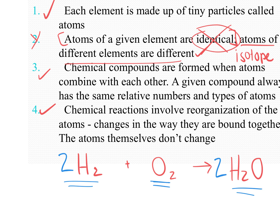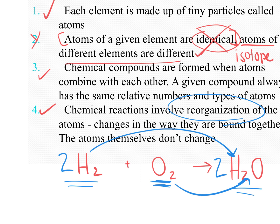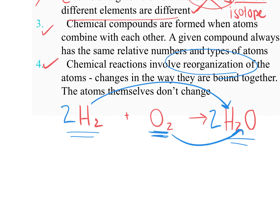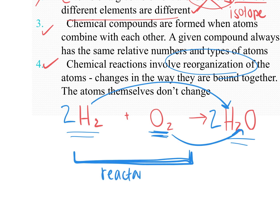This reaction satisfies the law of conservation of mass — the atoms rearrange themselves from reactant to product. The hydrogen started out bonded to each other and now they're bonded to oxygen; the oxygen started bonded to each other and now they're bonded to hydrogen. They reorganized within the chemical reaction. The left side is called the reactants, and the right side is called the products.